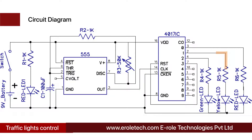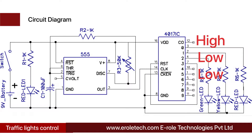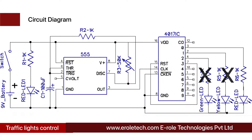Red LED is connected at pin number 3, yellow LED at pin number 2, and green LED is connected at pin number 4 of the CD4017 IC. Initially, the CD4017 IC will give a high output at pin number 3 and low output at pins 2 and 4, so the red LED will turn on and the green and yellow LEDs will turn off.